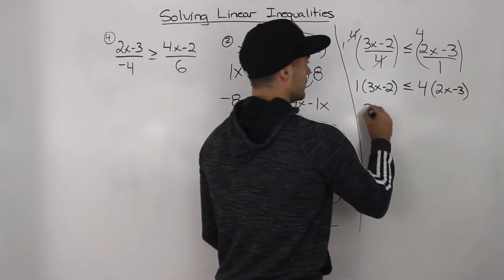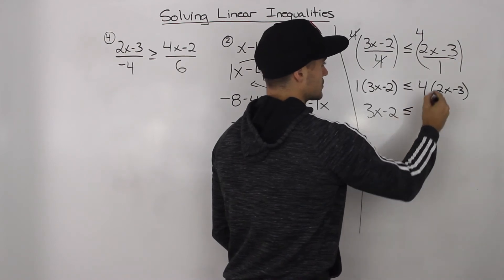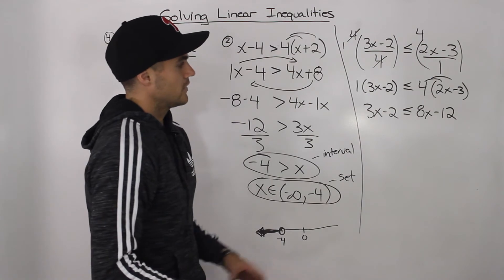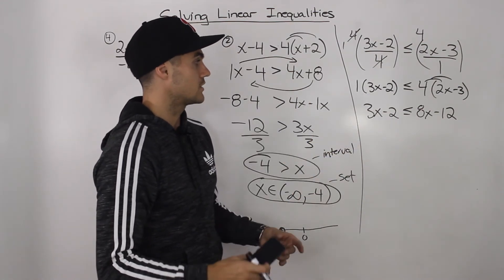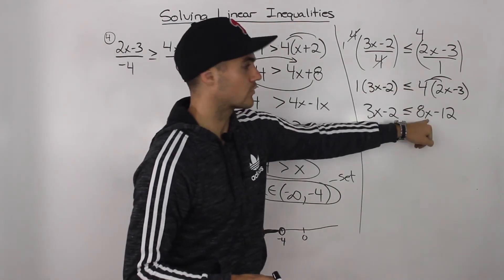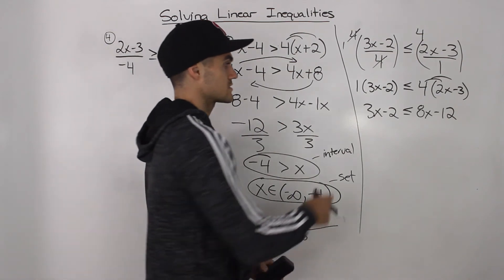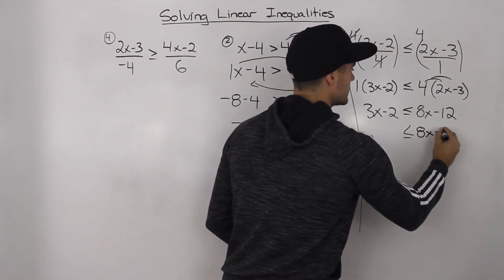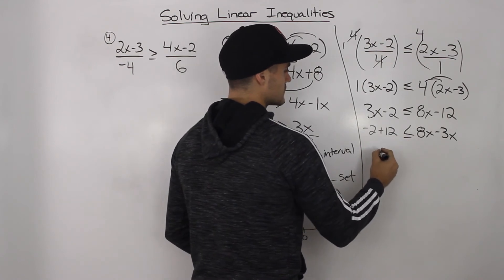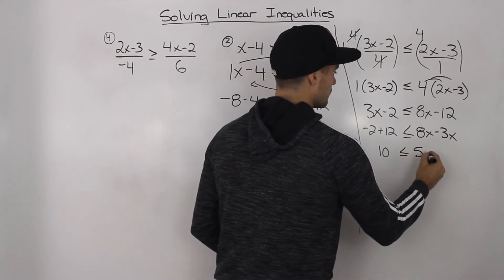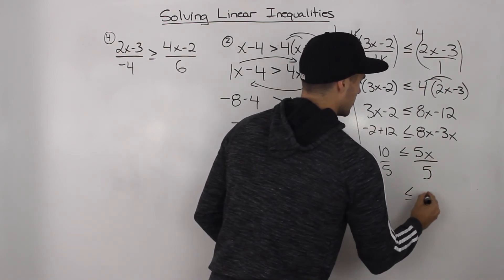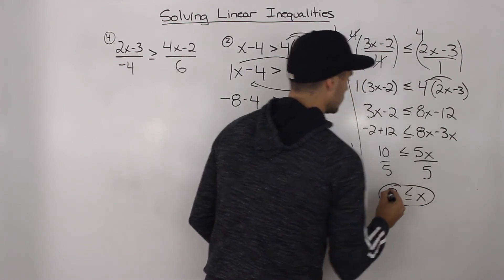We can get rid of this 1 here and just write 3x minus 2. When is it less than or equal to? Distribute this 4 inside: so 8x minus 12. Now we have to bring all the variables to one side, all of the numbers to the other. You want to bring over the variables in a way where you'll get a positive value. So bring this 3x over — it becomes negative — 8x minus 3x gives us positive 5x. Then bring negative 12 over: negative 2 plus 12 gives us 10. So we have 10 is less than or equal to 5x. Divide both sides by 5. The answer is x is greater than or equal to 2.